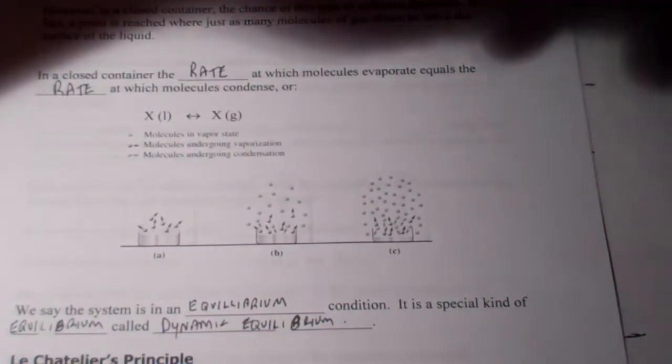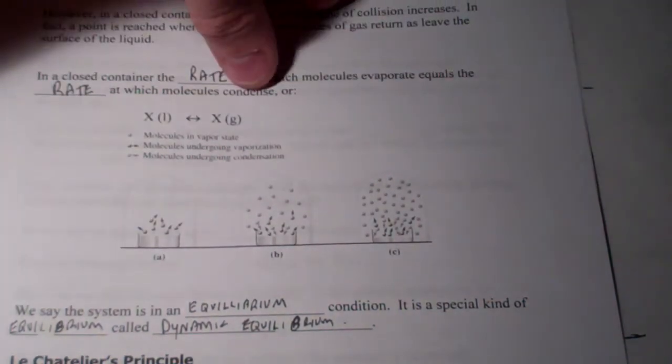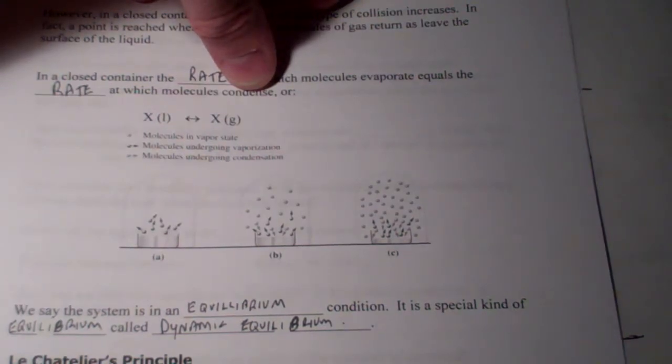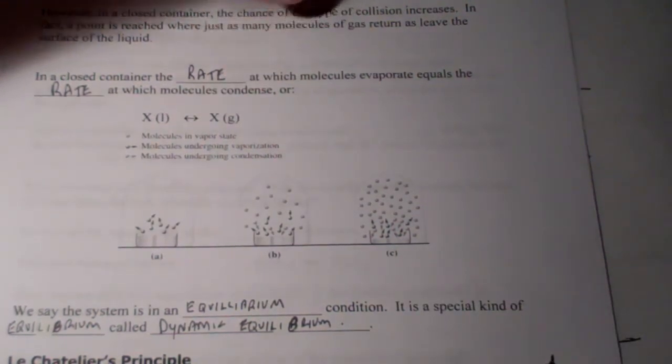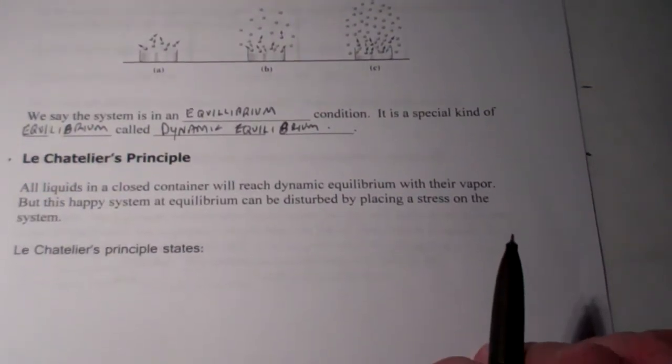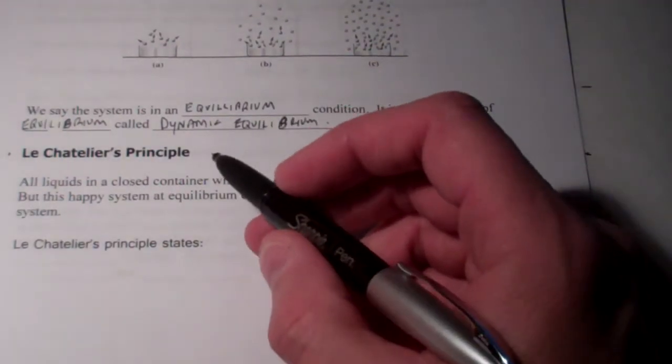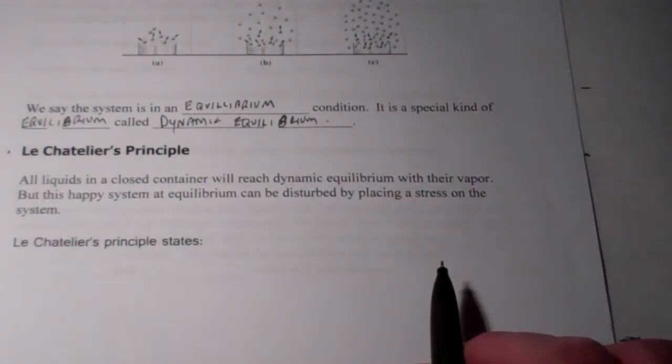Welcome back to part 2 of our chapter 10 lecture on the kinetic theory. We left off talking about equilibrium the last time we saw each other. And right now we're going to talk about a concept called Le Chatelier's Principle.